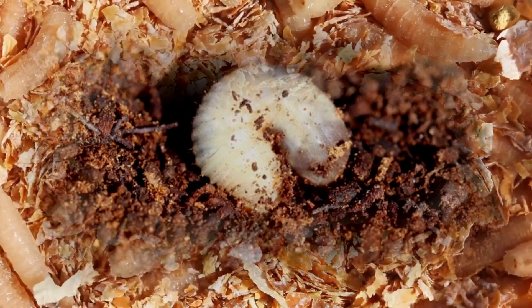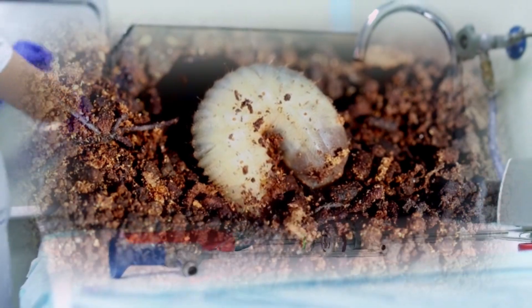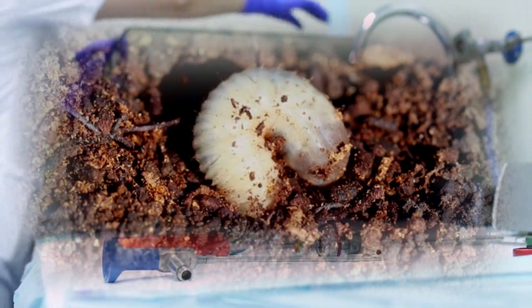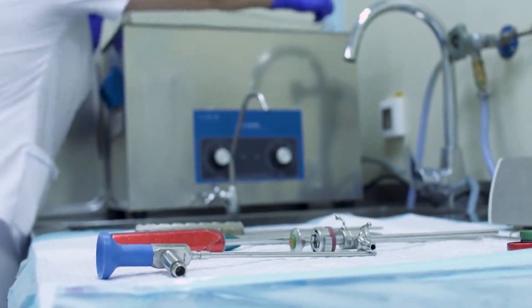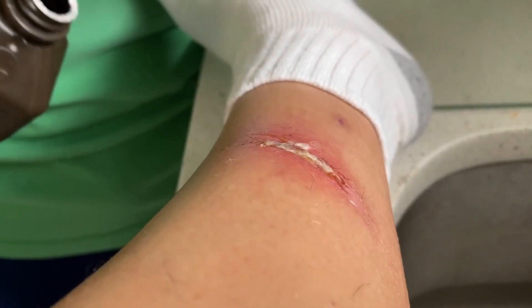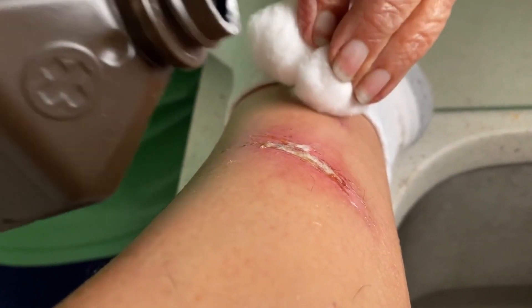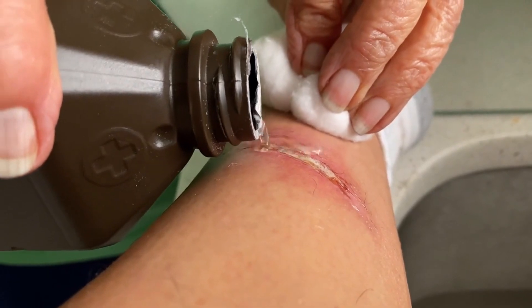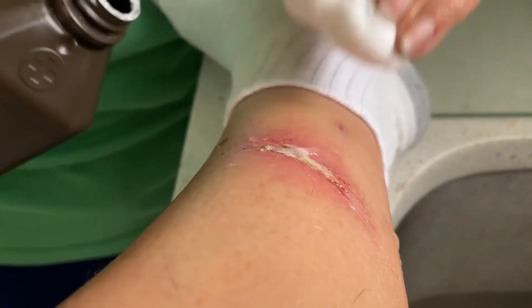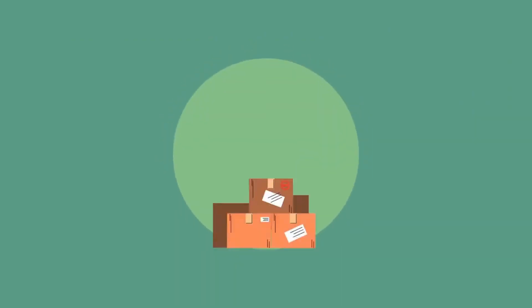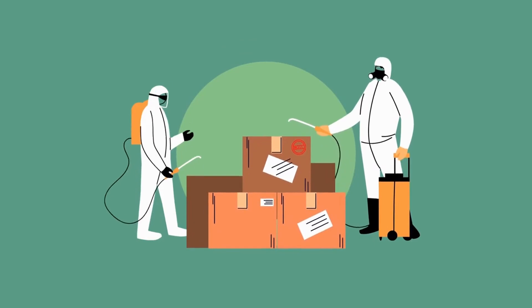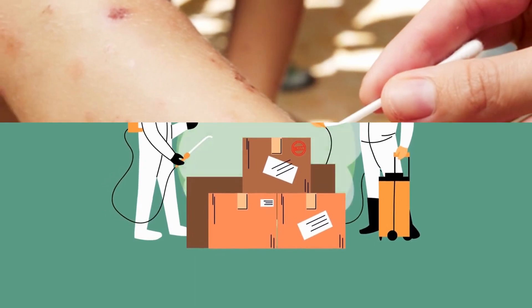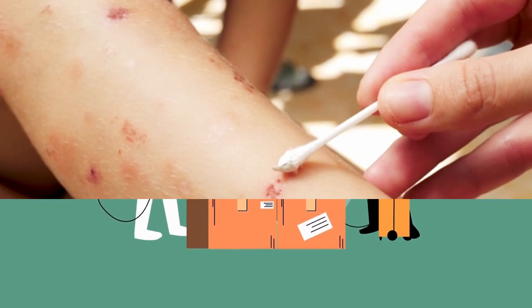Manual extraction of the embedded sand fleas is a crucial step in the treatment process. This can be done with sterile instruments like needles or tweezers. Care must be taken to avoid breaking the flea during extraction, as this may lead to increased inflammation or infection. After removal, the affected area should be disinfected again to minimize the risk of complications.